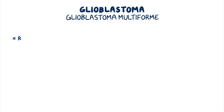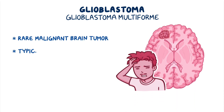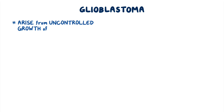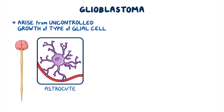Glioblastoma multiforme, or simply glioblastoma, is a rare malignant brain tumor that typically affects adults, and is one of the most common and aggressive cancers of the central nervous system. Glioblastomas tend to be sporadic and arise from the uncontrolled growth of a certain type of glial cell, called an astrocyte, within the central nervous system.